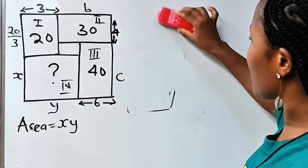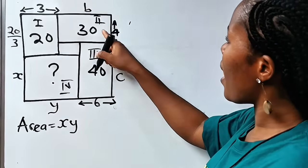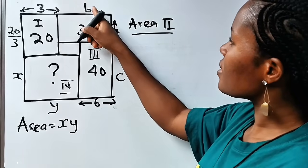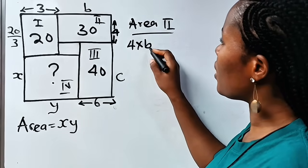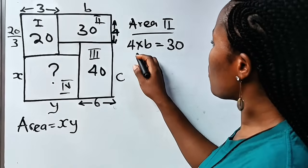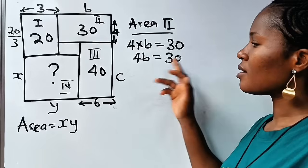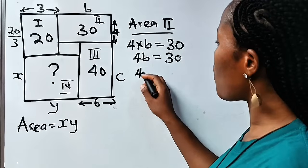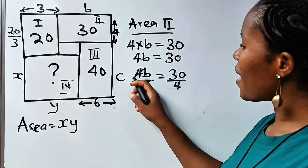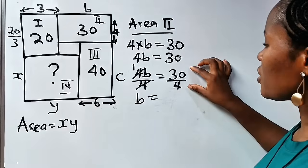Similarly, let us get the value of b. The area of rectangle II should be equal to 4 times b. Since the area is 30, we have 4 times b equals 30, so 4b equals 30. To get the value of b, we divide both sides of this equation by 4. So 4b divided by 4 is equal to 30 divided by 4.